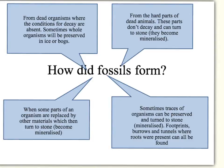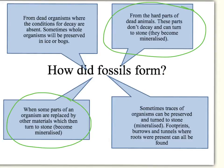First of all, we need to know how fossils actually formed. There are four ways that fossils can form, and this is a summary of how they occur. Two of them are very similar. One is where the hard parts of dead animals that don't decay can turn to stone or become mineralised, and the other is having parts of an organism being replaced by other materials that then turn to stone.